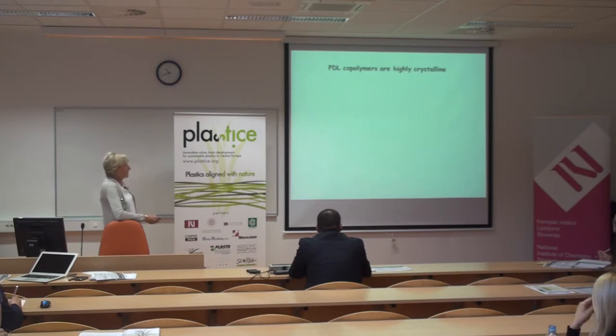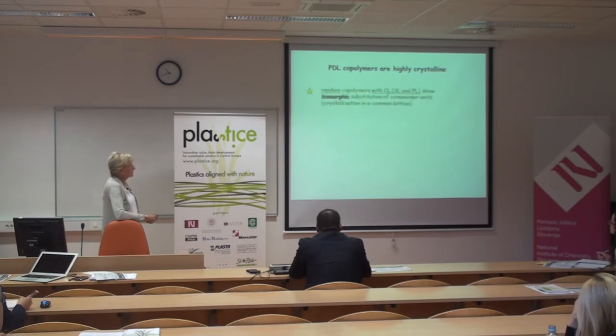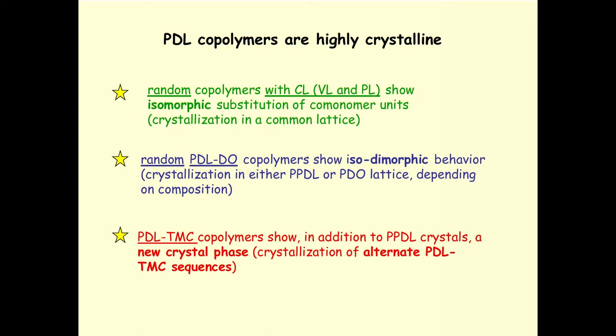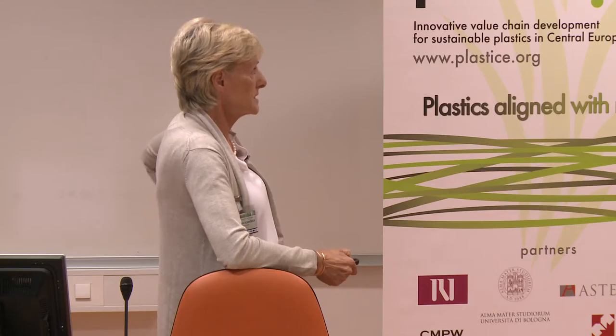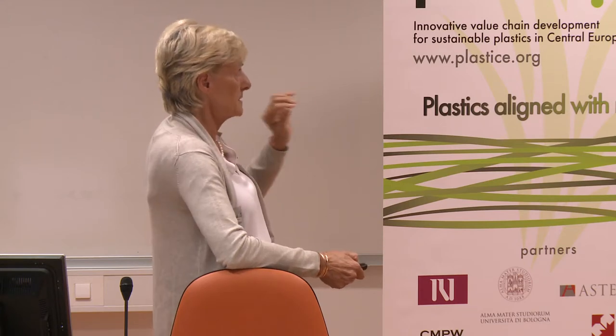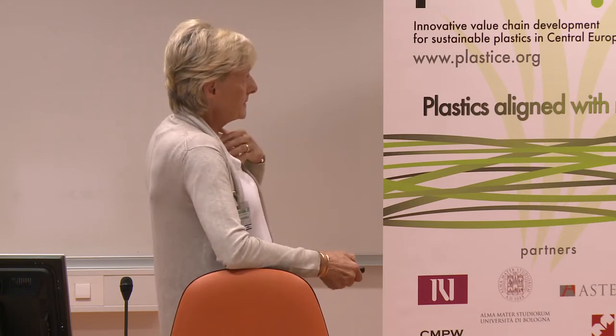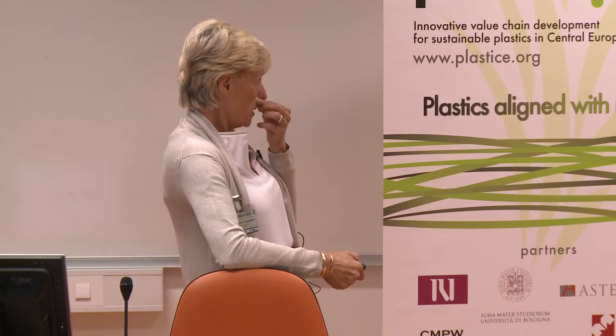Summarizing this part: PDL co-polymers are all highly crystalline. For random copolymerization with smaller lactones, we have isomorphic substitution — crystallization in a common lattice. For copolymers with dioxanone, we have an isodimorphic system — crystallization in either the PPDL or PDO lattice depending on composition. For pentadecalactone–trimethylene carbonate copolymers, we have high crystallinity, and with increasing alternate sequences these sequences crystallize in a new crystal phase.